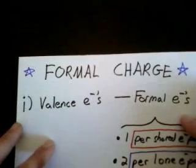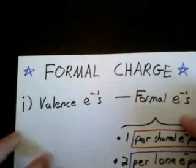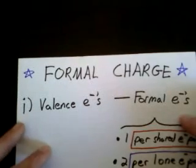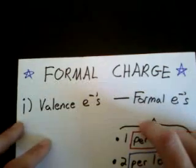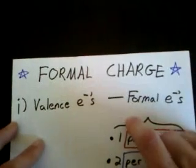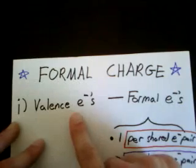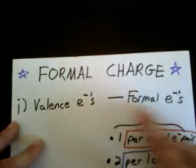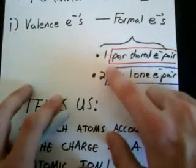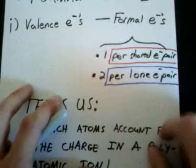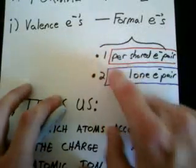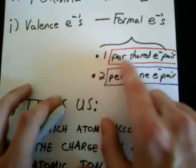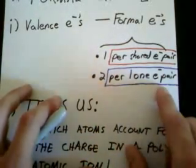In this video I'm going to be talking about formal charge. For any given atom in a compound or an ion, to get that atom's formal charge, you take the valence electrons that atom normally has and subtract away the formal electrons. To get the formal electrons, we refer to the Lewis structure line bond structures — formal electrons is one per shared electron pair and two per lone electron pair.